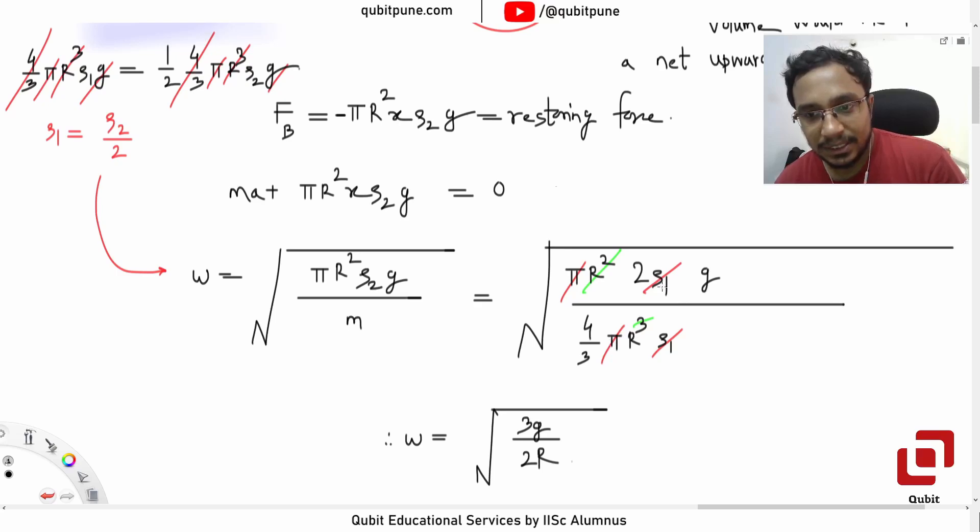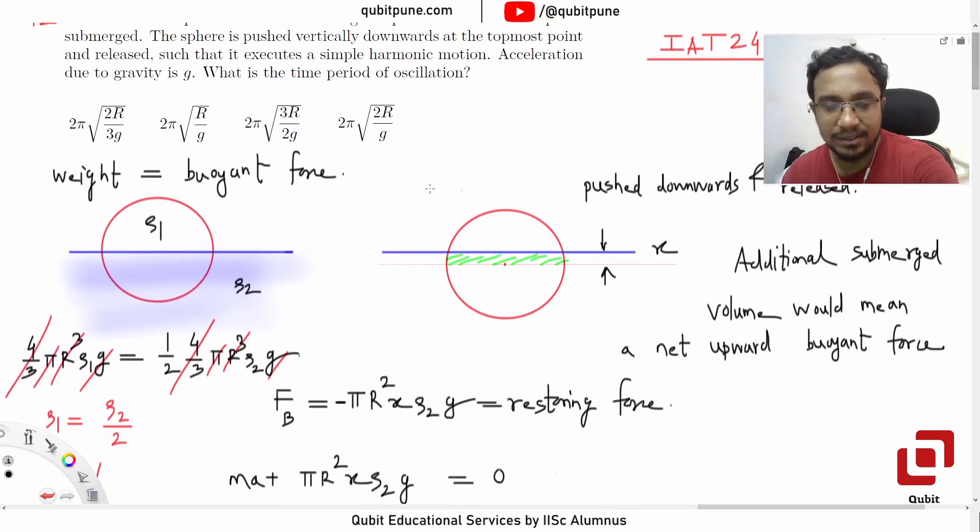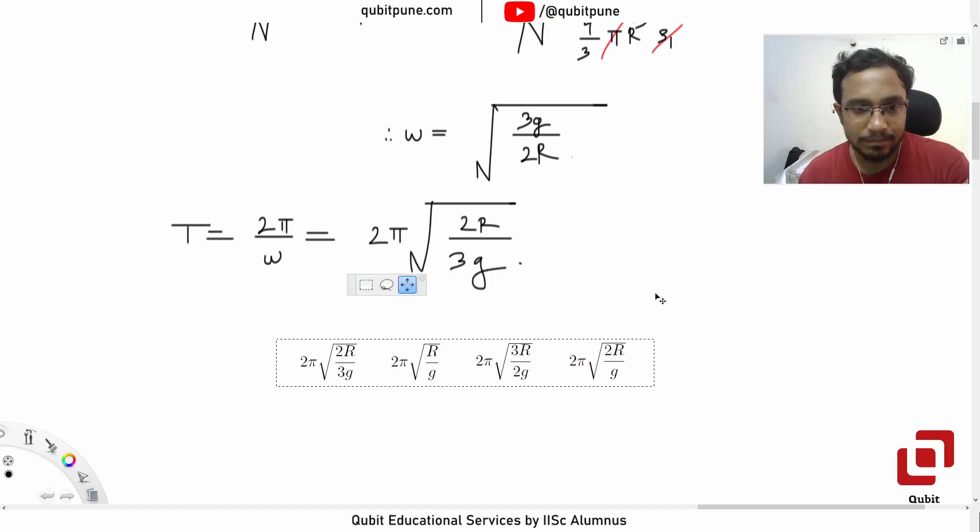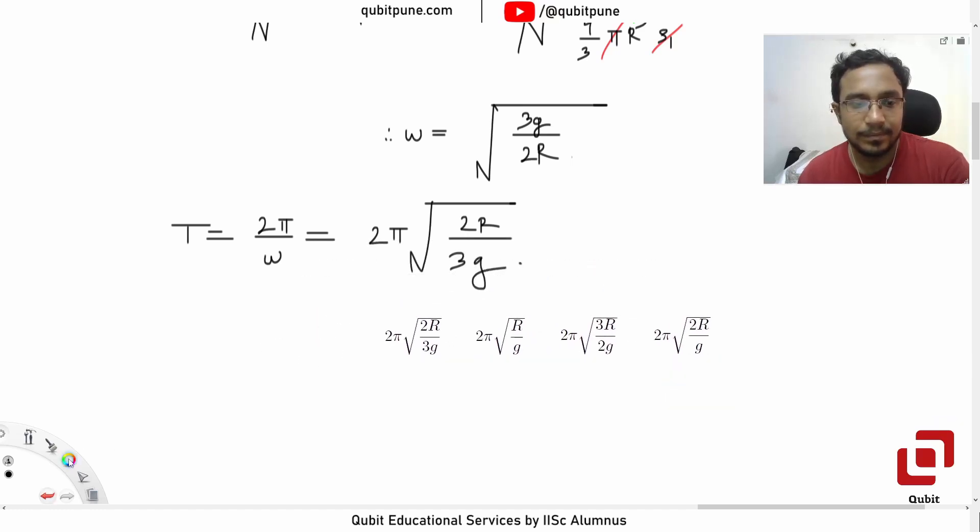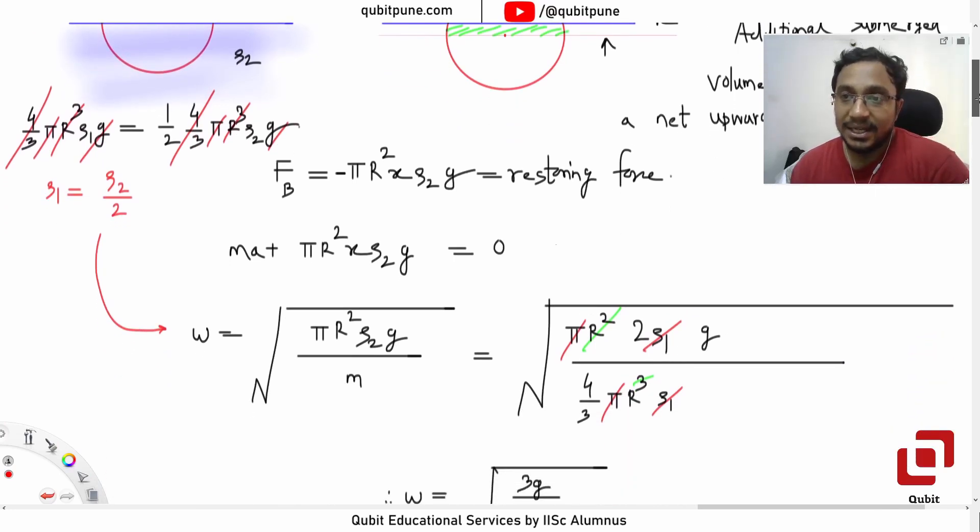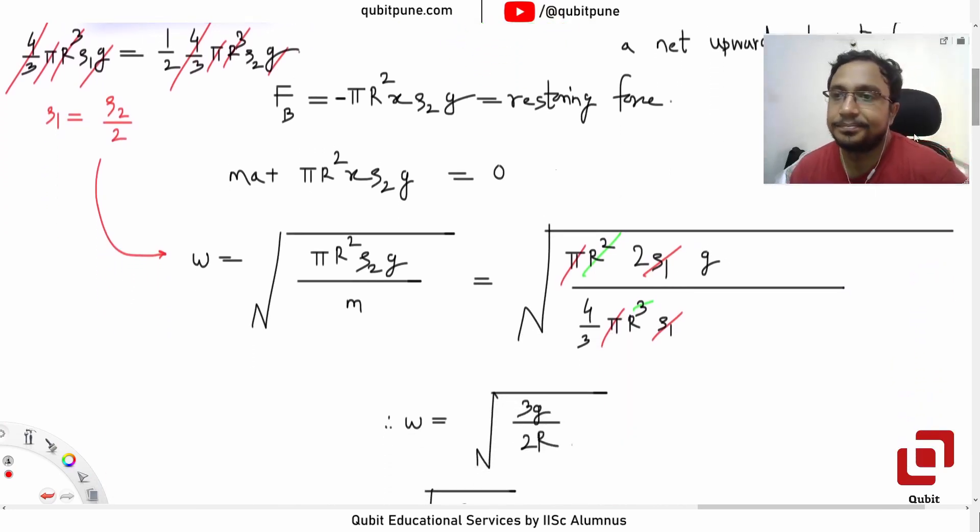Just convert it to time period. Time period is 2π/ω, so it will be 2π√(2r/3g). This option. Is that clear? Yes sir.